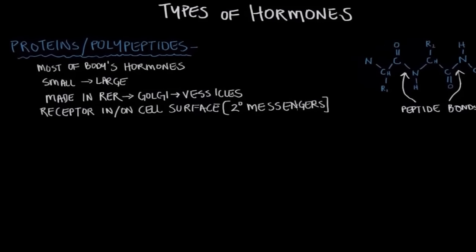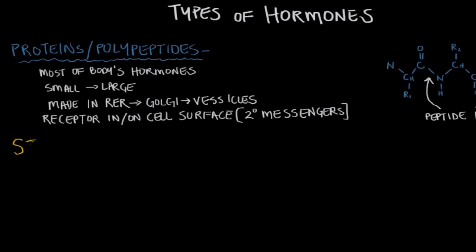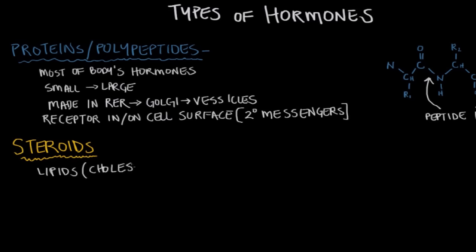The second major type of hormones are steroids. Steroids are actually one of the major types of hormones used in our body to communicate — there are a lot of steroids in our body. Steroids come from lipids, and the major lipid that they come from is cholesterol.